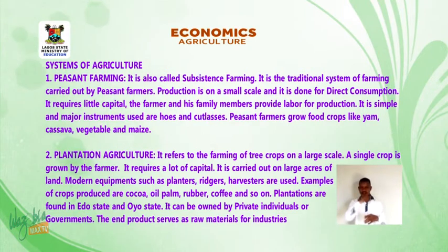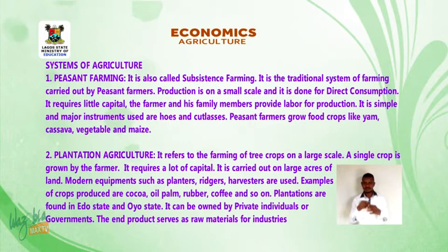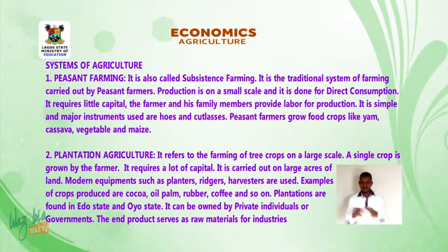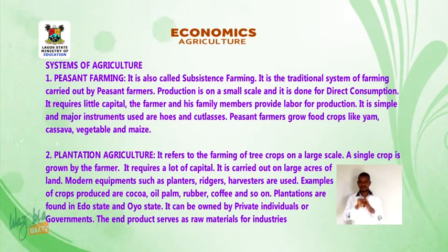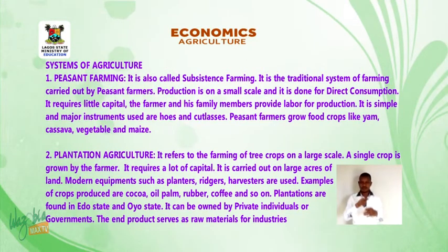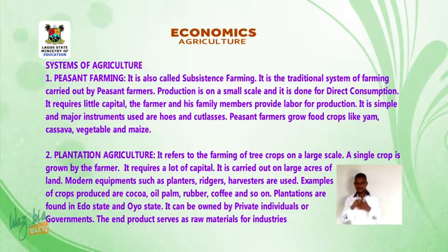2. Plantation agriculture refers to the farming of tree crops on a large scale. A single crop is grown by the farmer. It requires a lot of capital and is carried out on large acres of land. Modern equipment such as planters, ridges, and harvesters are used. Examples of crops produced are cocoa, oil palm, rubber, coffee, and so on. Plantations are found in Edo State and Oyo State. They can be owned by private individuals or governments. The products serve as raw materials for industries.